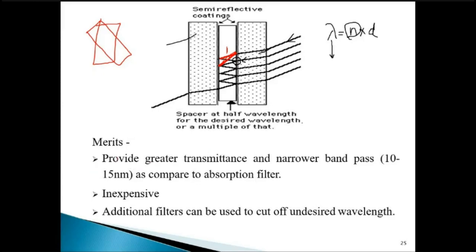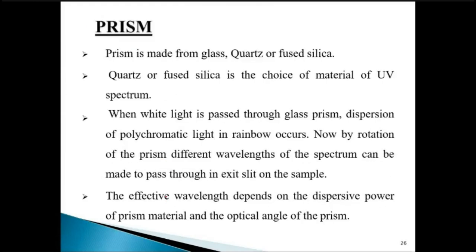The merits of interference filters are that they provide greater transmittance and a narrower bandpass. They are inexpensive and the construction does not require very sophisticated instrumentation — it is relatively simple. Additional filters can also be used to cut off any undesired wavelengths.